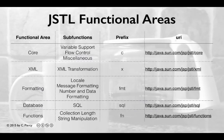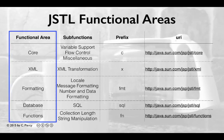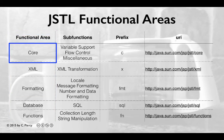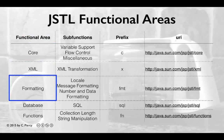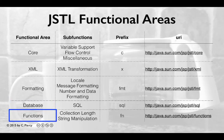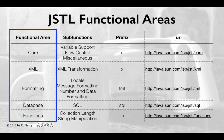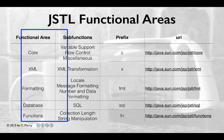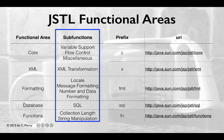Like many libraries, the JSTL is divided into sections. These are called functional areas. The five functional areas are the core, XML, formatting, database, and functions. Each functional area has sub-functions of responsibility.